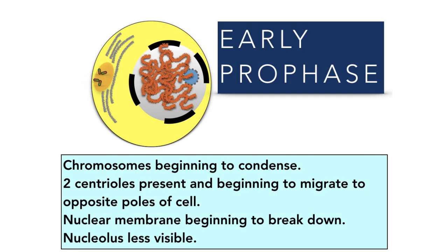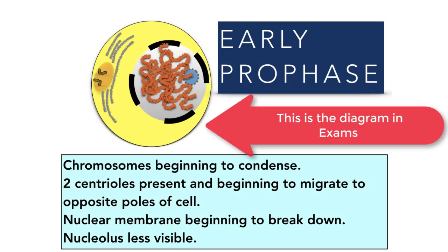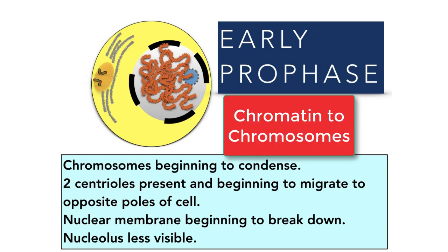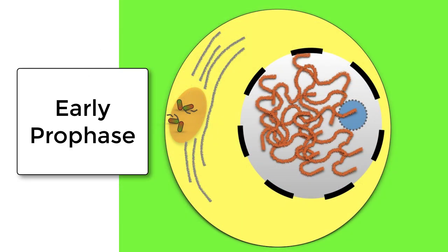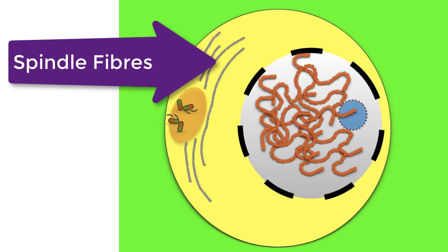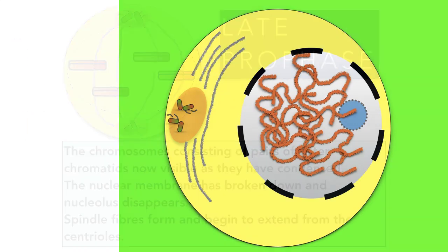The first stage of mitosis is prophase, and we'll divide it into early and late prophase. In early prophase, the chromosomes are beginning to condense and are becoming visible, the two centrioles are present and beginning to migrate to opposite poles of the cell, the nuclear membrane is beginning to break down, and the nucleolus is less visible. To recognise a diagram of early prophase, look for the spindle fibers beginning to form and the appearance of the centrioles.